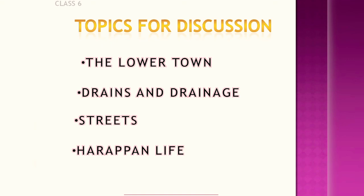At the top of Harappan society were the people who planned the construction of monumental buildings in the city — they were probably the rulers. The rulers of the Harappan civilization were very privileged with money and wealth as well as decision-making authority, and were considered the ruling class.